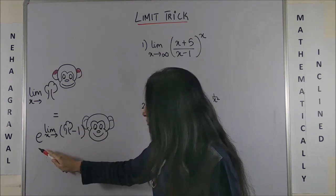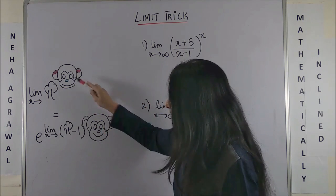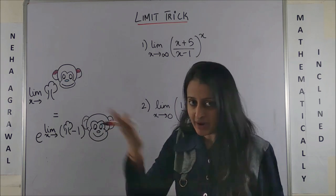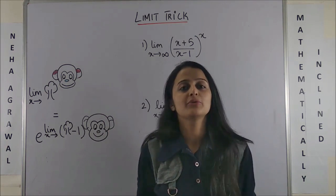So it is e to the power, which you introduce on your own. E to the power limit extending to whatever it is, cut down this tree—means tree minus one—and the monkey automatically comes down. We are going to use the same technique here.